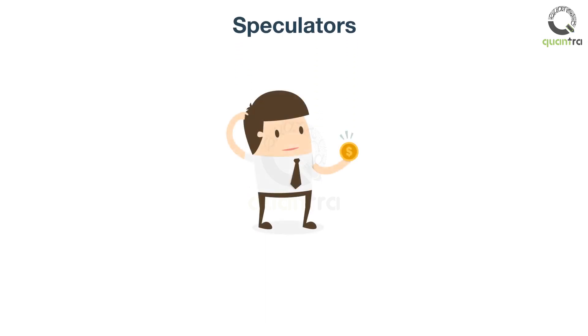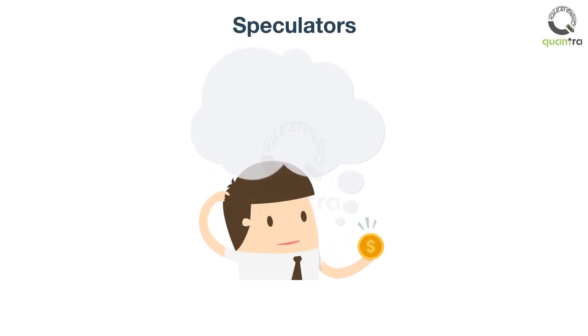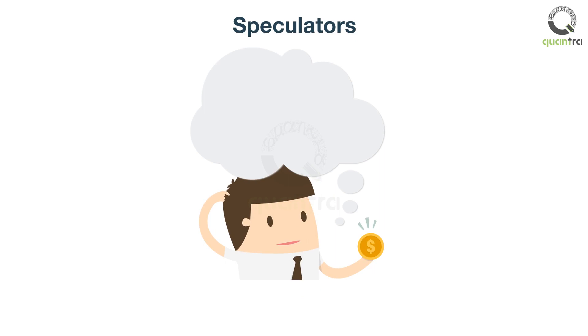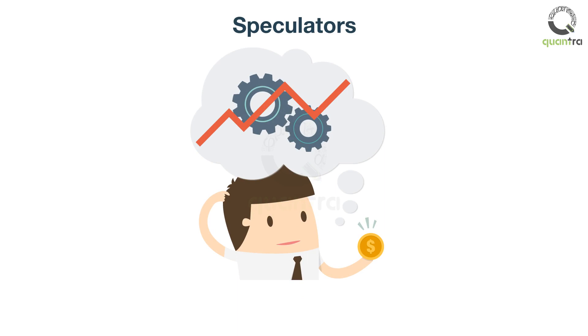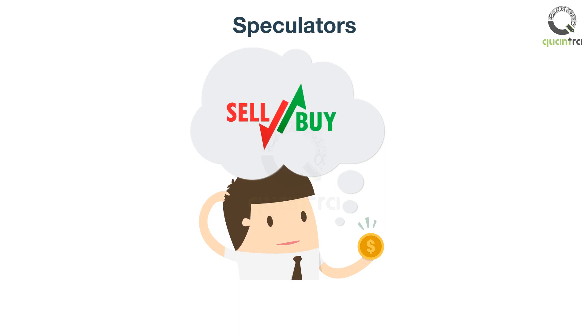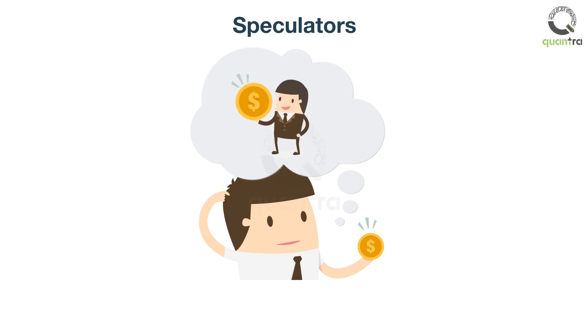Now that you know what speculating is, it's time to learn about speculators. Traders who speculate about the markets are known as speculators. Also, they are traders who are not investing, but making an educated guess about which way the asset price will go. Additionally, based on the information they have, they buy or sell whichever they think will be profitable. In other words, they are profit-motivated traders.